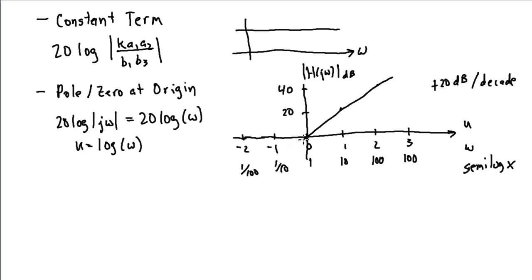This would continue to the left as well. At u equal to minus one, omega equal to one tenth, the log of one tenth is minus one, so twenty times that is minus twenty, then minus forty, and so on. So a graph of a term like this is just a straight line that goes through omega equal to one, or u equal to zero, and increases to the right at a rate of twenty dB per decade. Ours was a denominator term, so we're subtracting it. Minus twenty log of omega would be a line decreasing at a rate of twenty dB per decade.